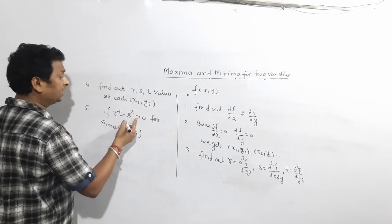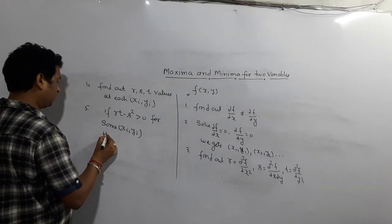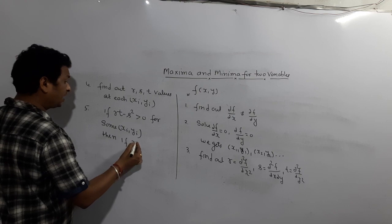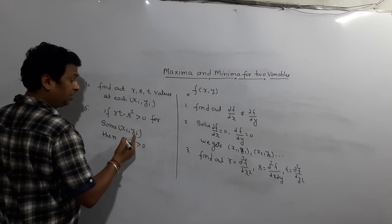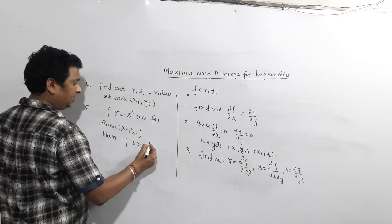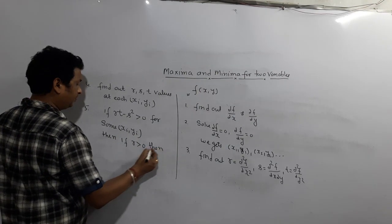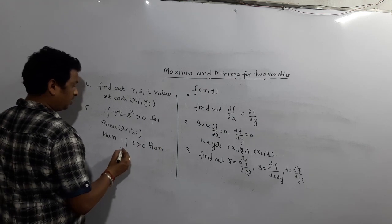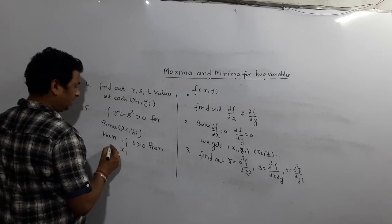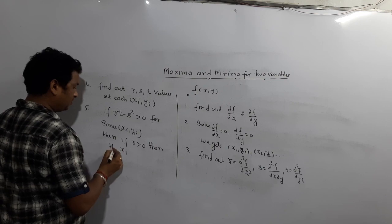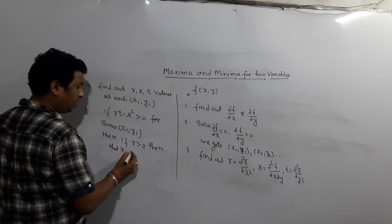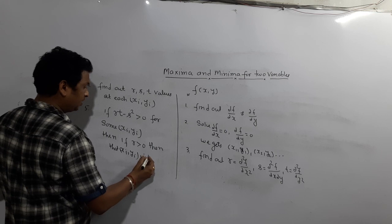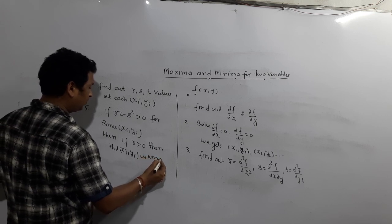What is R? R = ∂²f/∂x². What is S? S = ∂²f/∂x∂y. What is T? T = ∂²f/∂y². You can easily find out these partial differentiations — R, S, T.